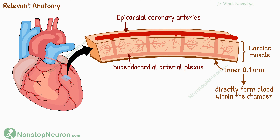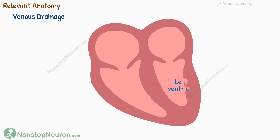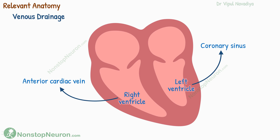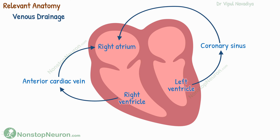So this was the arterial supply. Talking about venous drainage, most of the blood from the left ventricle drains into the coronary sinus, and most of the blood from the right ventricle drains into anterior cardiac veins. They both empty the blood into the right atrium. Apart from this, some small vessels called Thebesian veins empty directly into the nearby chamber of the heart. The blood entering the left heart this way bypasses the pulmonary circulation, so this tiny fraction of blood enters the systemic circulation without getting oxygenated.